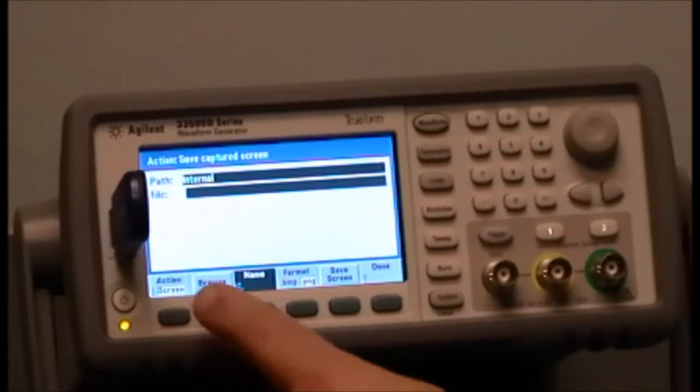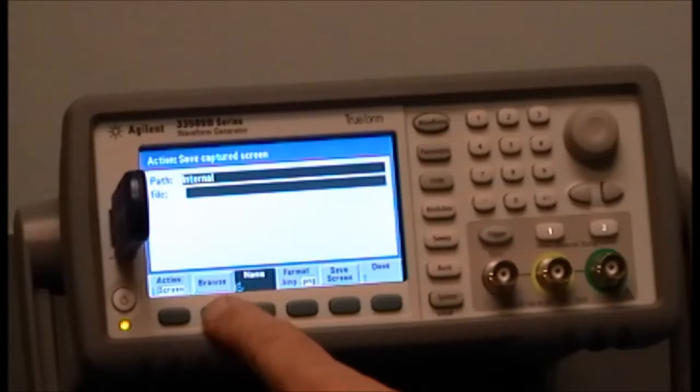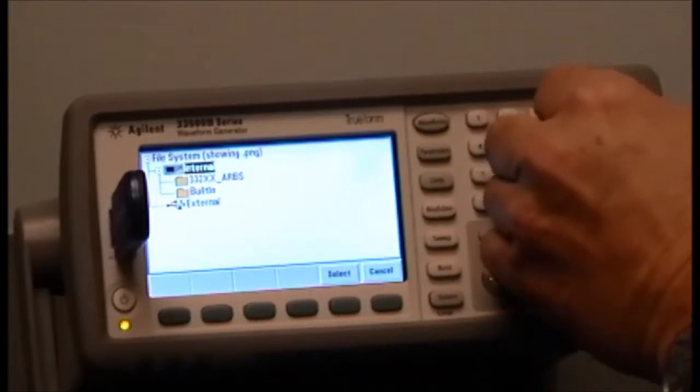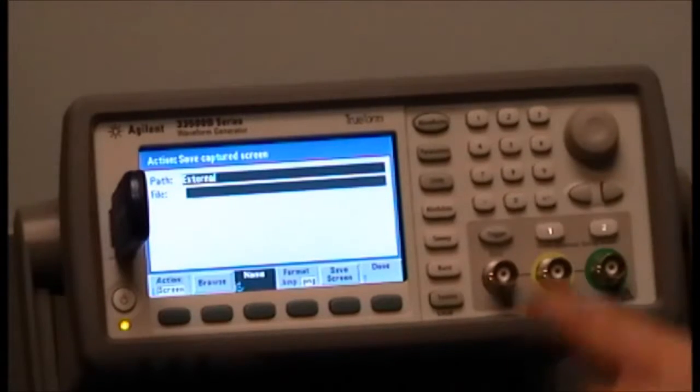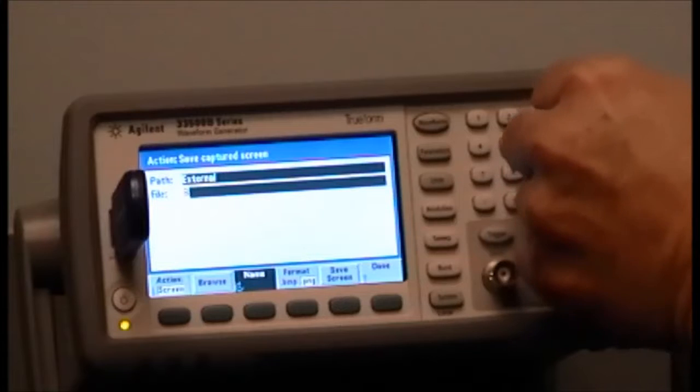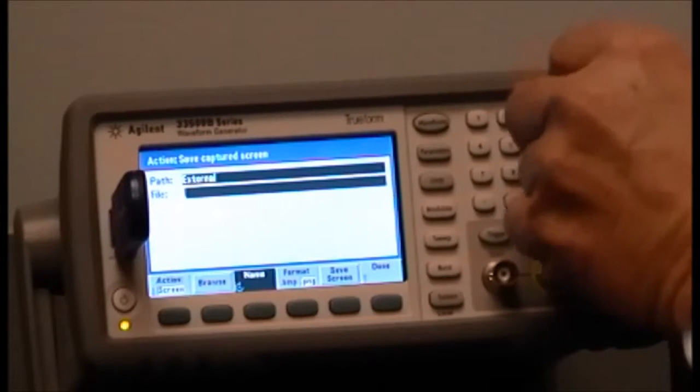Then we can browse the memory. We want to select external which is the stick. We can name it if we like. I'll pick K for Keysight.